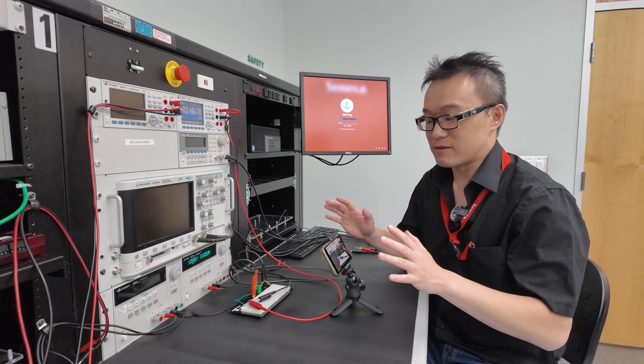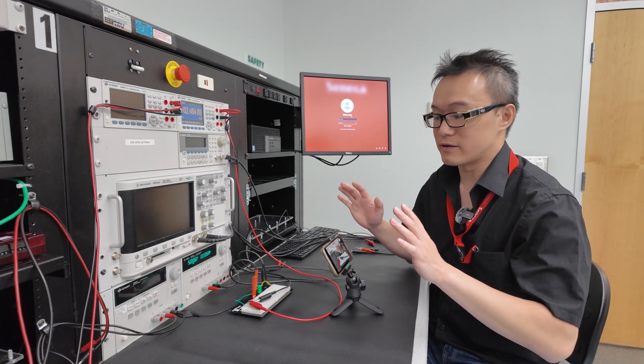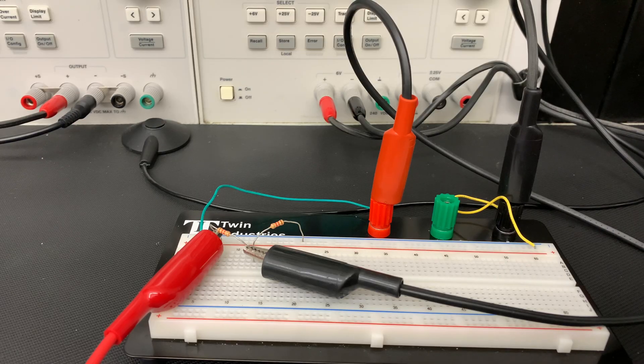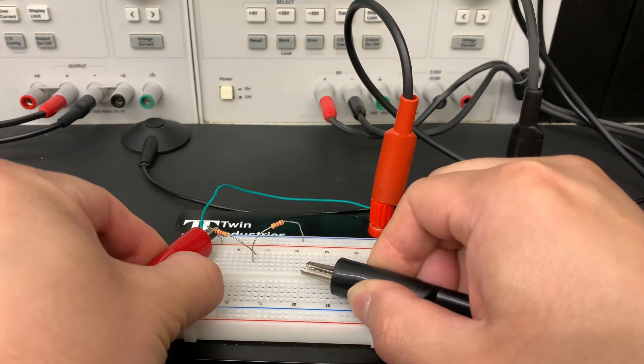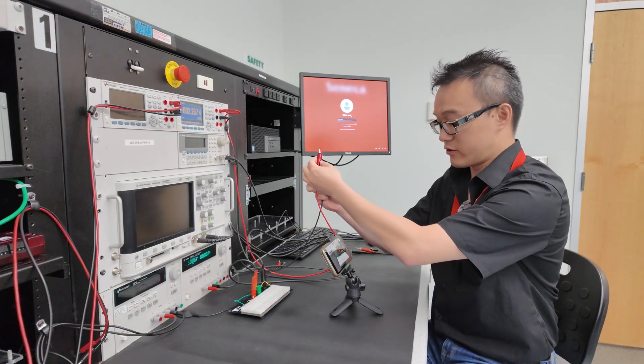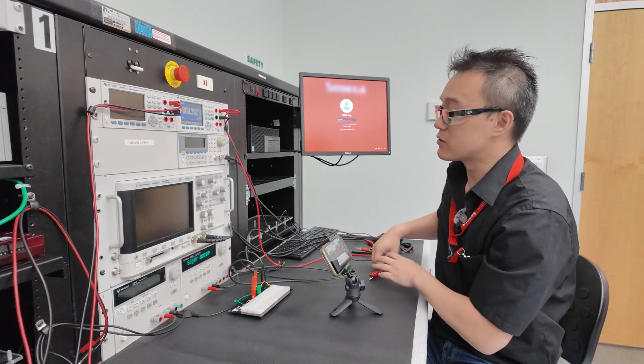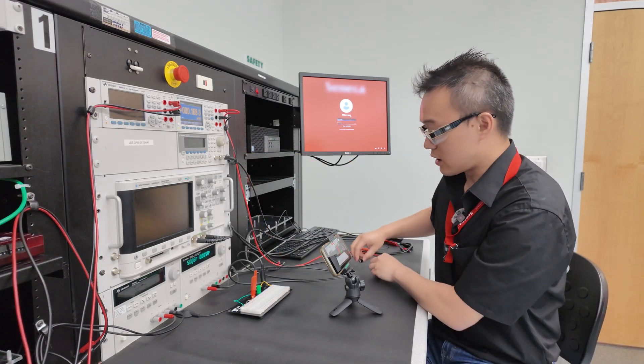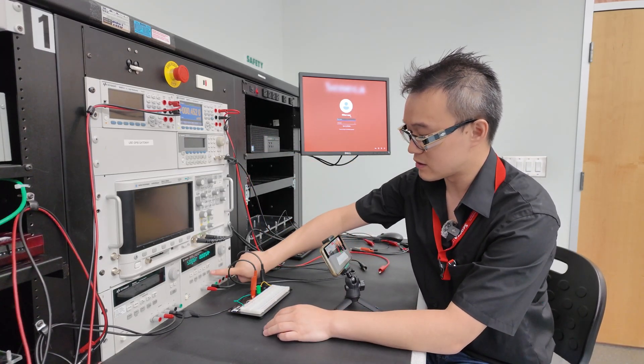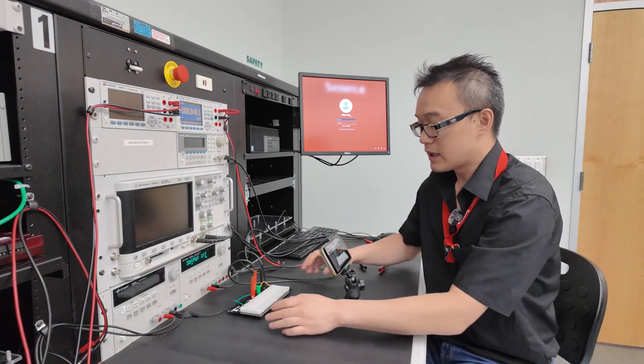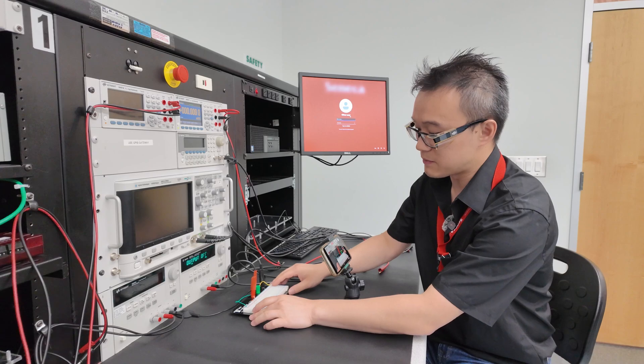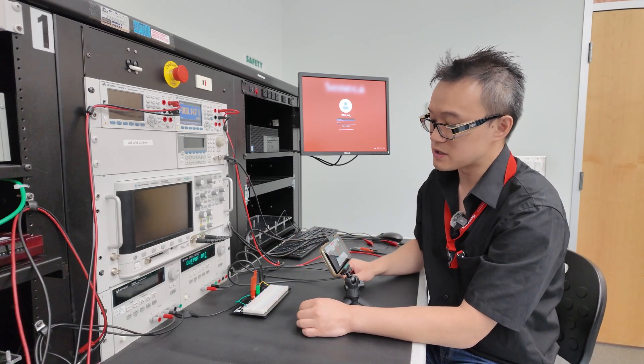Once again, after we finish taking the measurement, safety is always first. The first thing we want to do is unclip the two alligator plugs from the multimeter. You can keep it on, you don't have to shut it off, but the key thing is to turn off the output of the power supply. And then depending on if you're going to use the power supply more, you can always turn off the power supply as well.